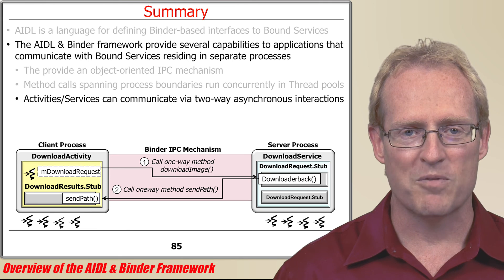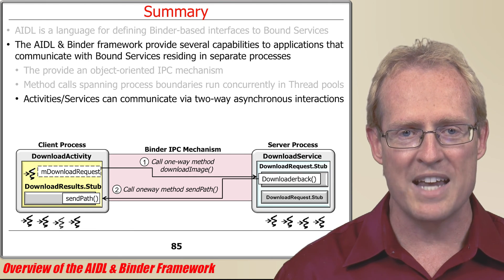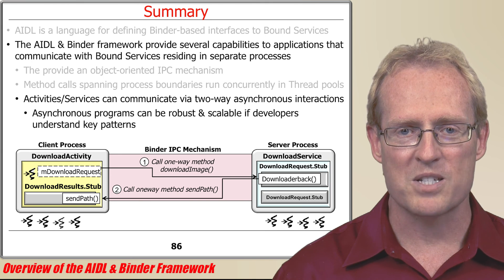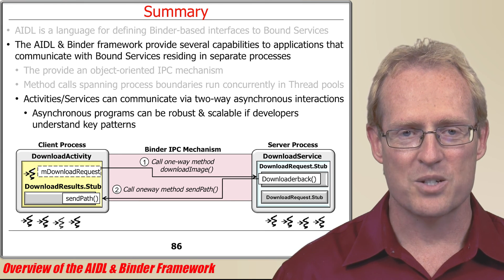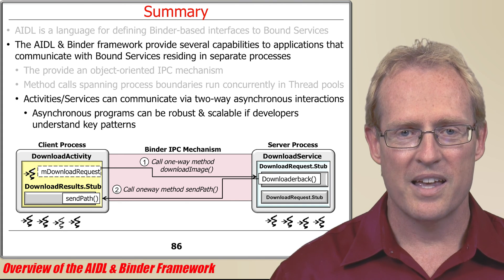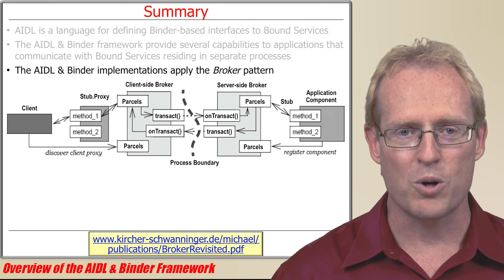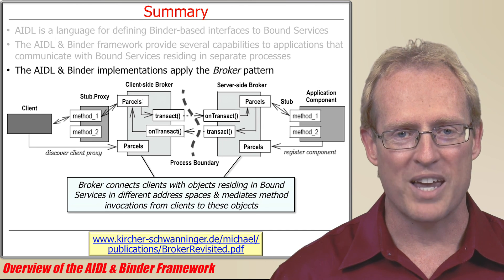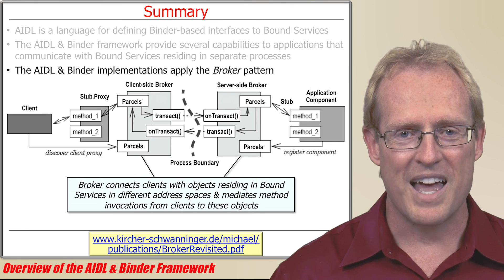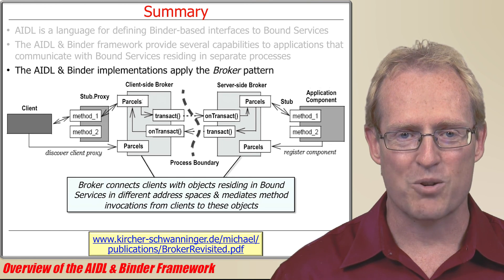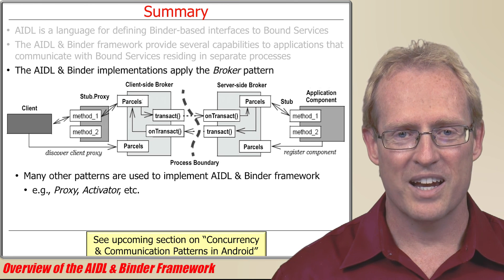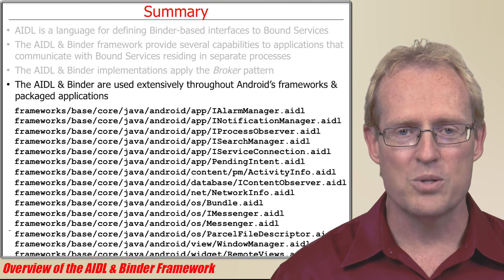Third, the AIDL and binder simplify the development of activities and services that can communicate via two-way asynchronous interactions that block neither callers nor callees. Fully asynchronous programs can be more robust and scalable as long as developers understand the relevant patterns, such as state, asynchronous completion token, and proactor. The AIDL and binder implementations apply the broker pattern to connect clients with objects residing in bound services in a different address space, and mediate method invocations from clients to these objects by encapsulating application code from low-level inter-process communication details such as connection management, marshaling and demarshaling, data transfer, concurrency, and process crashes. Other patterns are also applied in Android's implementation of broker, including proxy and activator. The AIDL and binder are used extensively in Android, and hundreds of AIDL files appear in Android's frameworks and packaged applications.